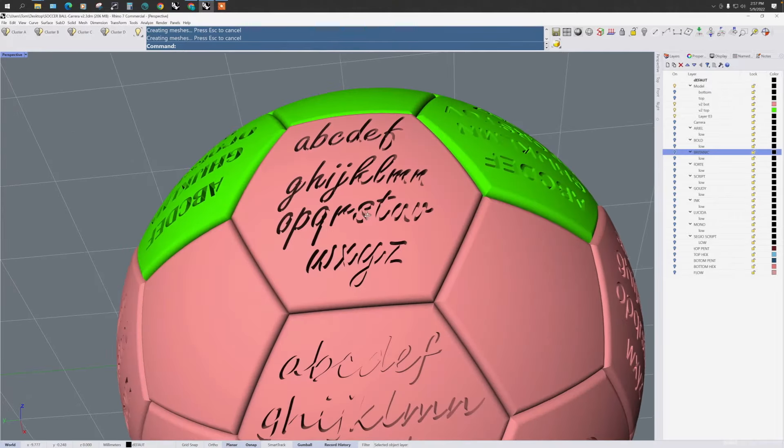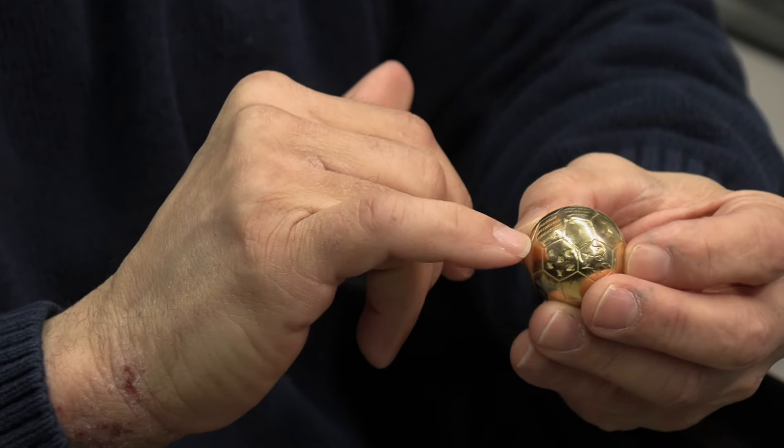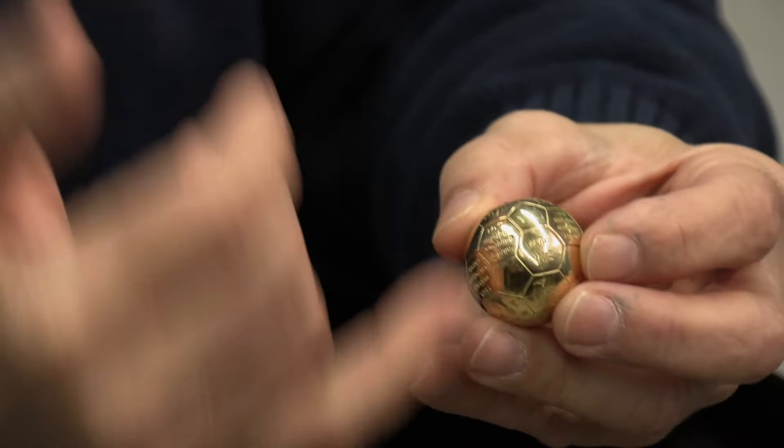different fonts, different scripts, different shapes, different sizes. And here is the soccer ball in gold with all the engravings we put on it.